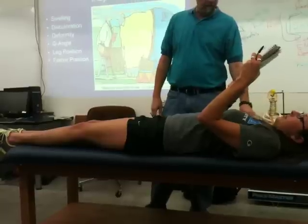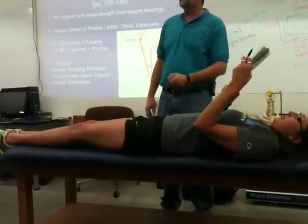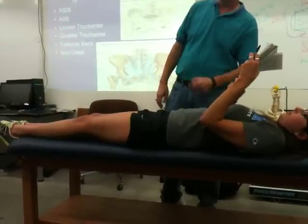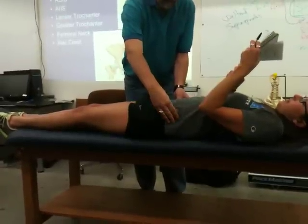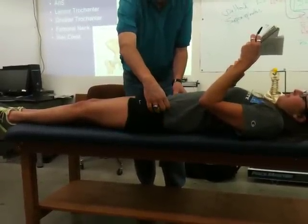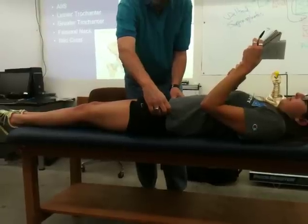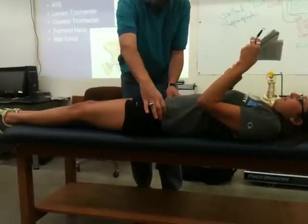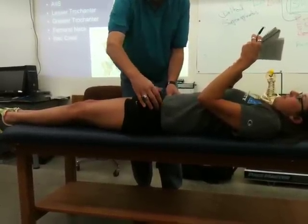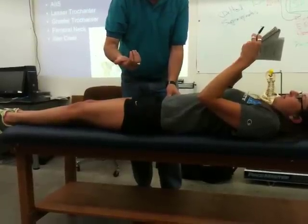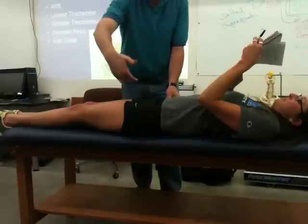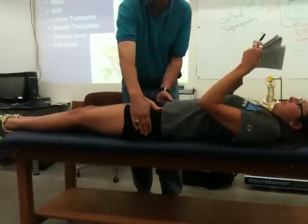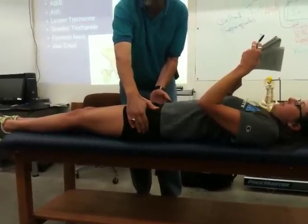In terms of bony palpation, we've got a bunch of sites. We've got our anterior superior iliac spine. Below that, kind of hard to find because it's under the rectus femoris tendon, is the anterior inferior iliac spine. We've got the greater trochanter, and the iliopsoas goes into the lesser trochanter — we're not going to palpate that for modesty reasons.